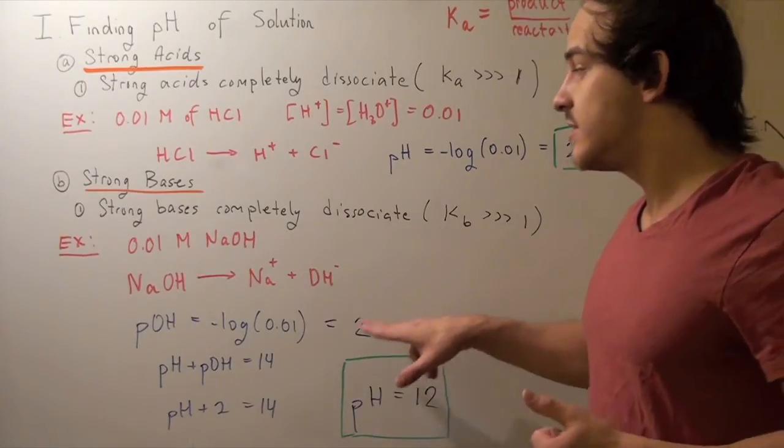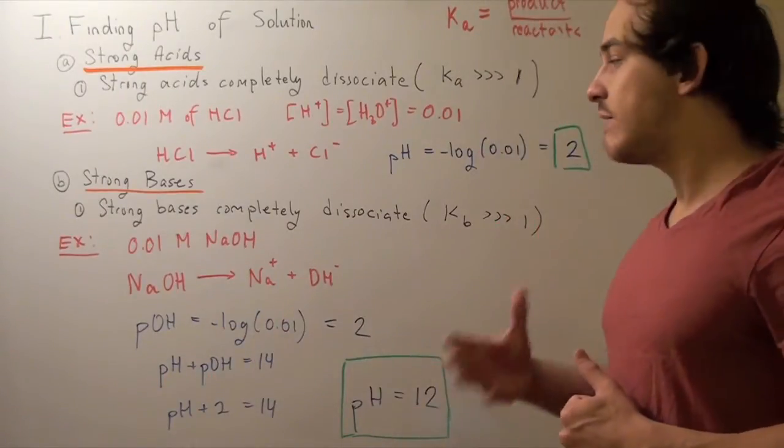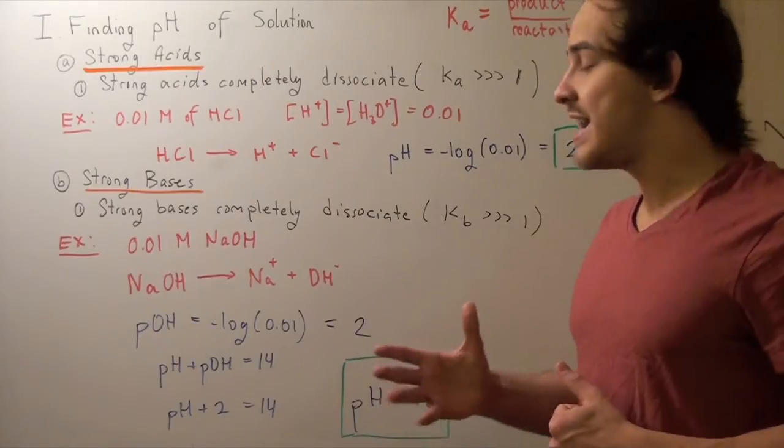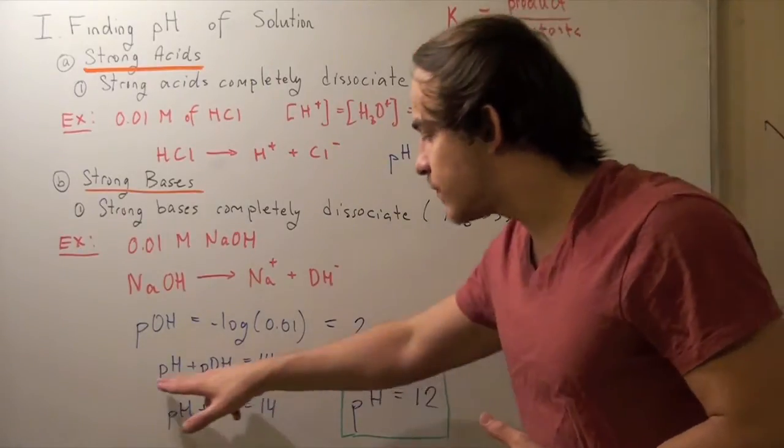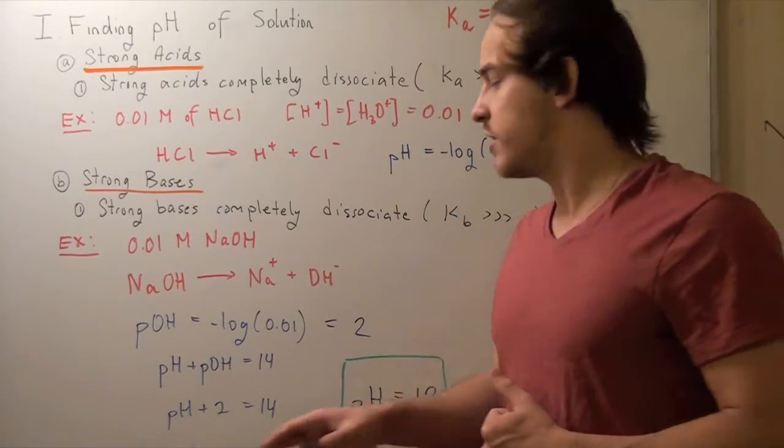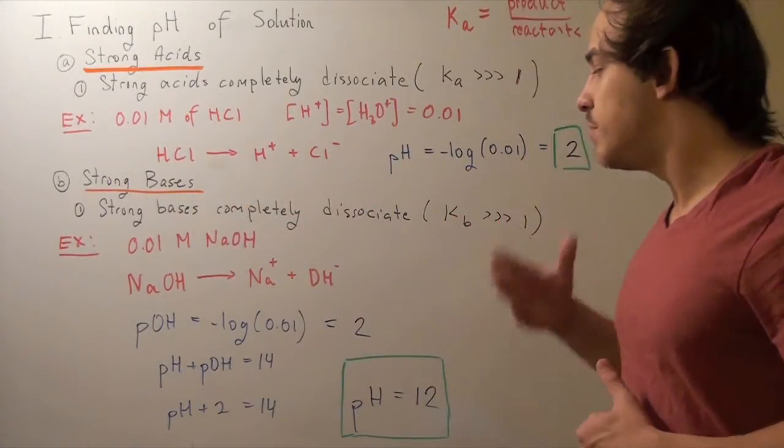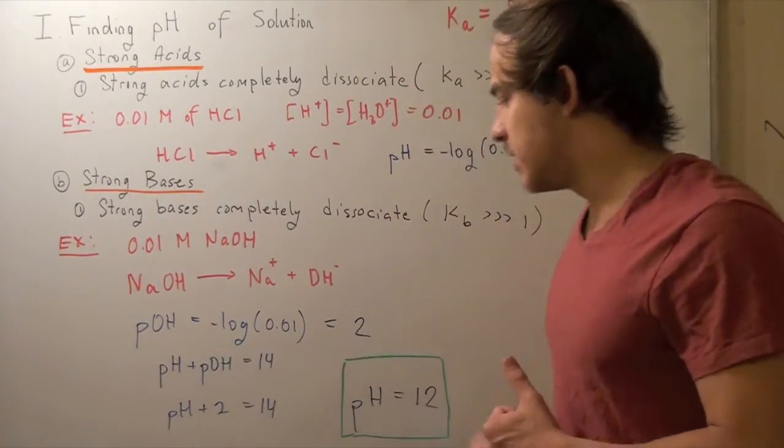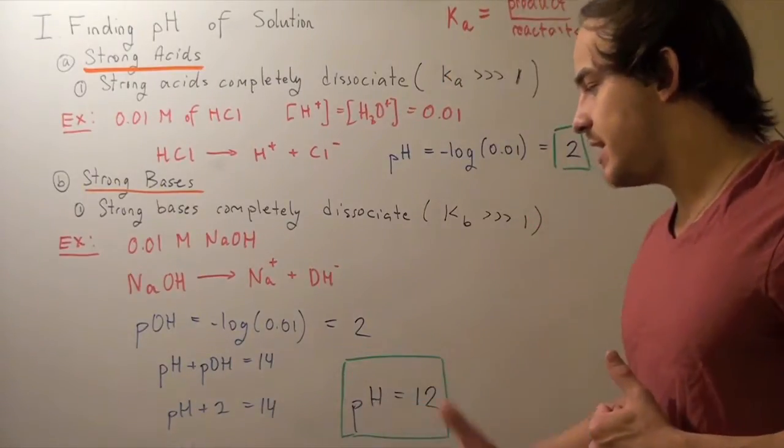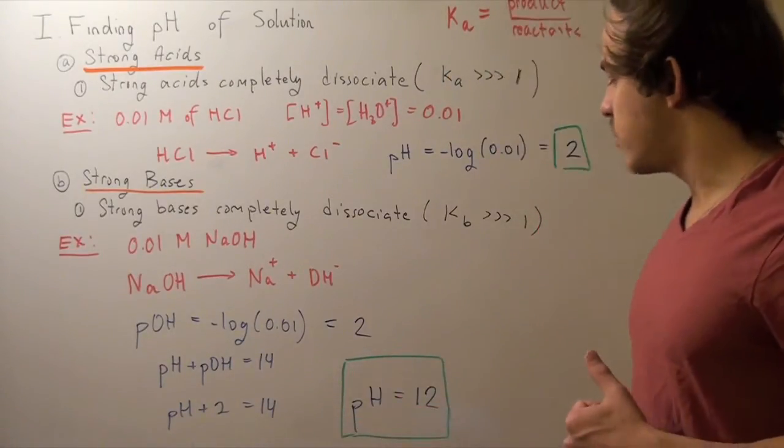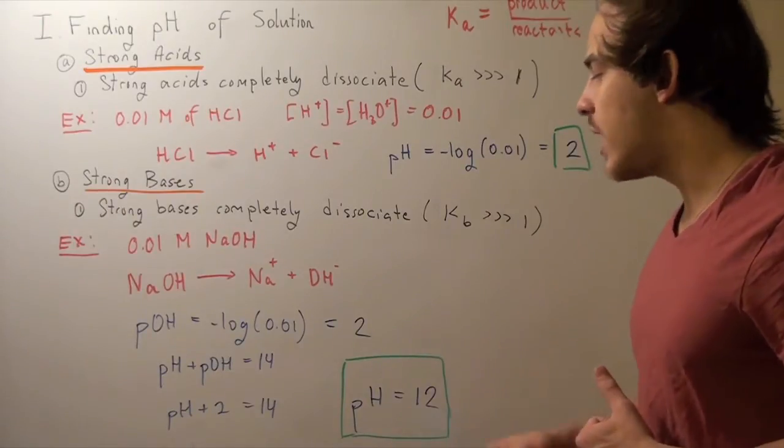But wait, this is the pOH. So we have to convert this to pH. And how do we convert it? Well, we use this formula. If you don't know where this formula comes from, check out the link below. So we plug that into our formula and we get pH plus 2 equals 14. We subtract 2 from 14 and we get a pH of 12.